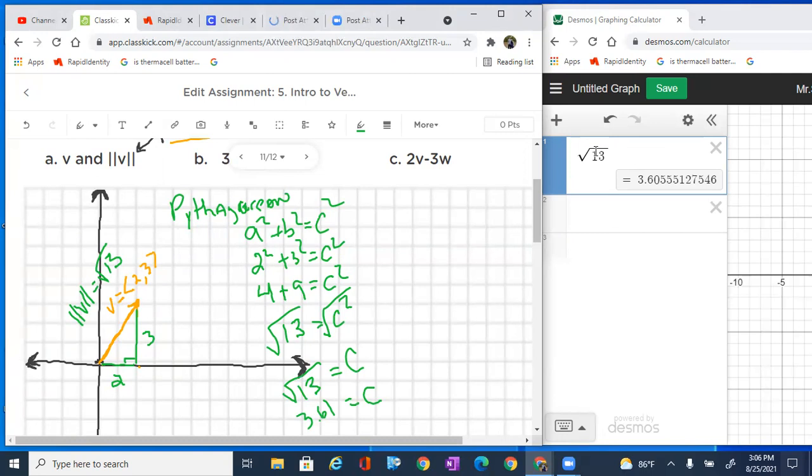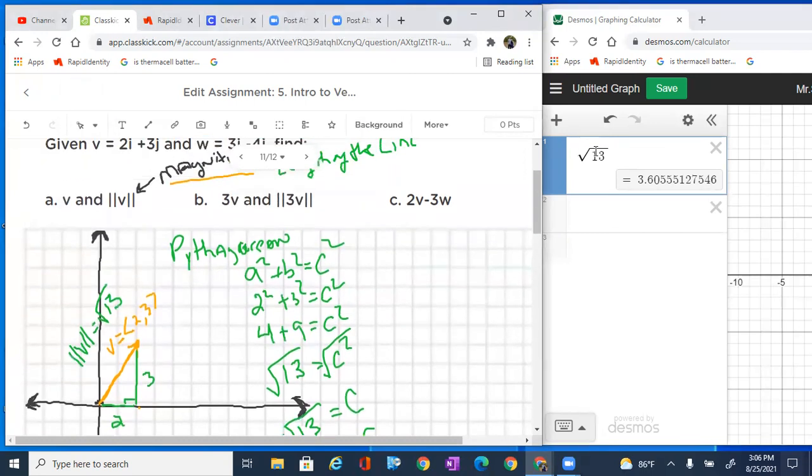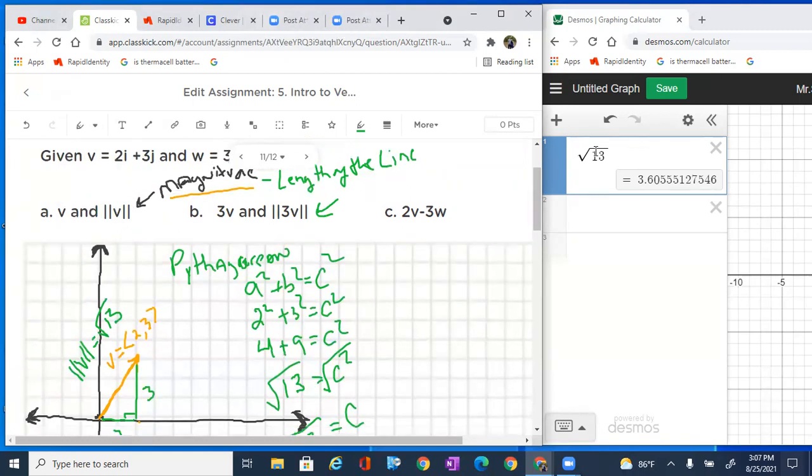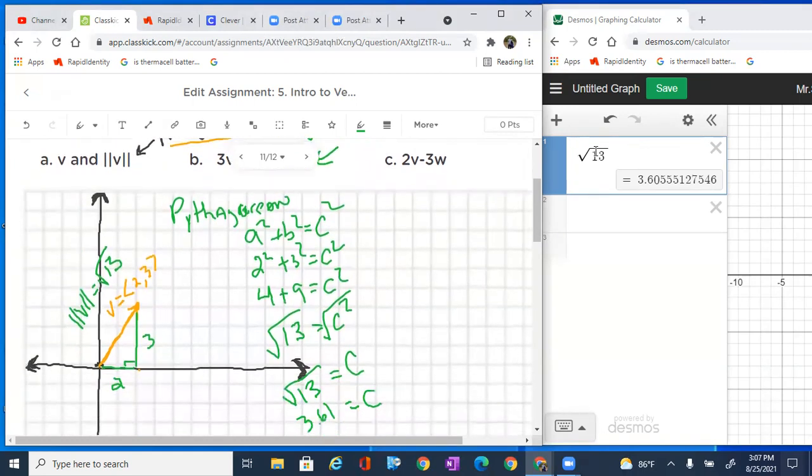Now, if we go to the next portion of this, it then says, well, what about for b? It just simply says, what about if it is 3v and what is the magnitude of 3v? Well, what does that mean, 3v?